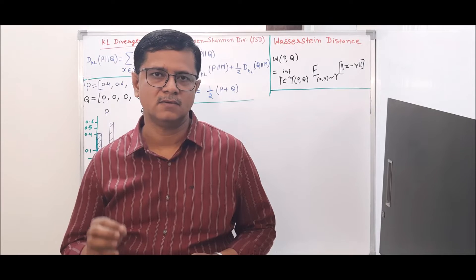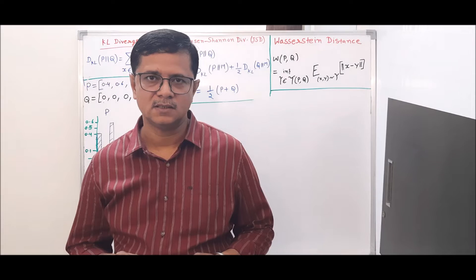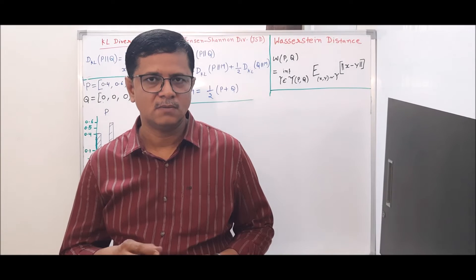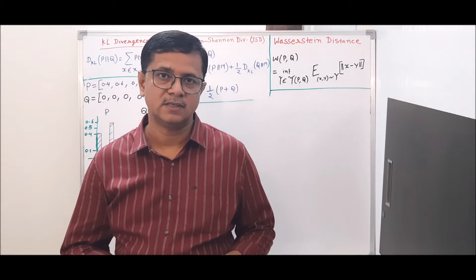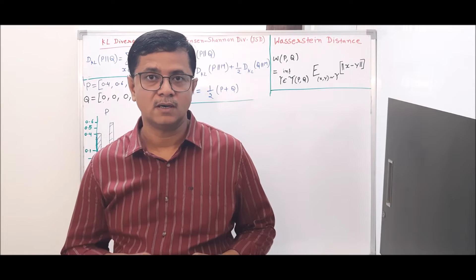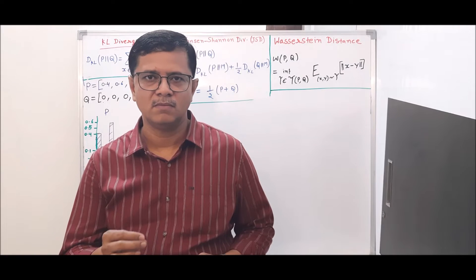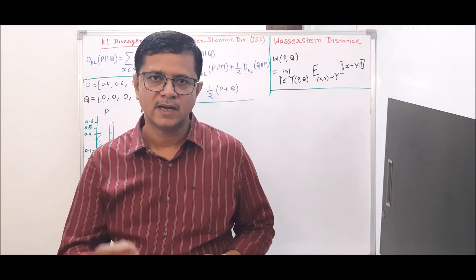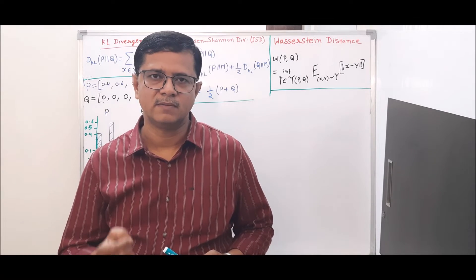The main component of Wasserstein GAN is Wasserstein distance. To properly understand the role of Wasserstein distance, we have to go through some previous cost functions used in previous GAN architectures, like KL Divergence, Jensen-Shannon Divergence, and so on. GAN architecture contains two important components: generator and discriminator. The generator uses random samples to generate images which look real, and the discriminator tries to differentiate between actual real images and the images generated by the generator.